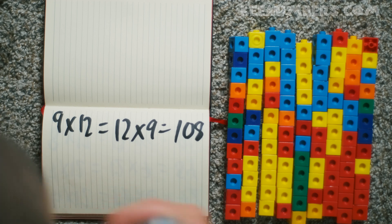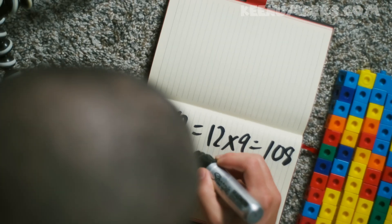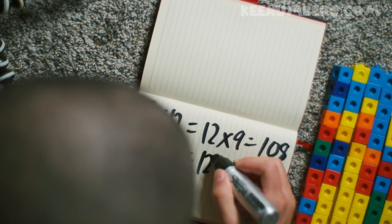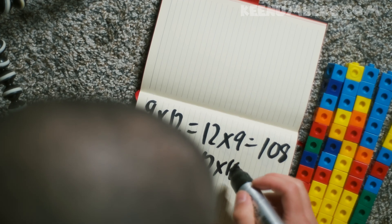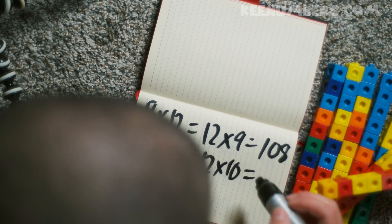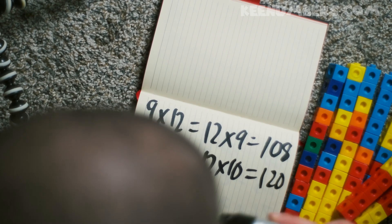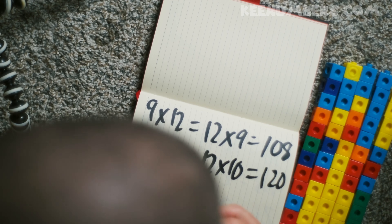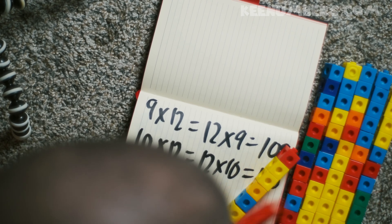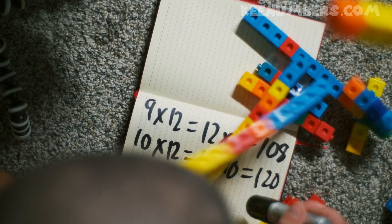We can finish this with 10 12s — that's the same thing as 12 10s. Greater Gator, what are you doing here? Come on, don't eat this — he's eating the stacks of 12. We know that 10 12s and 12 10s is 120.